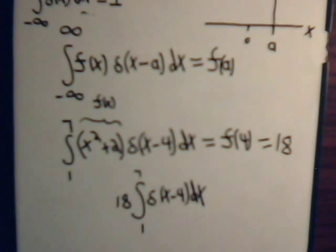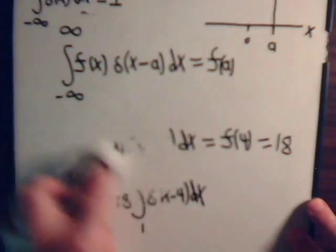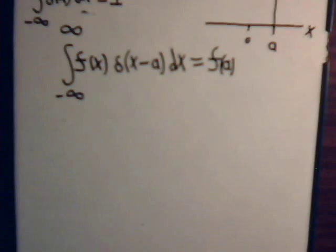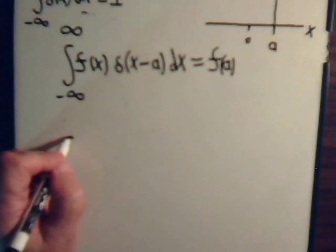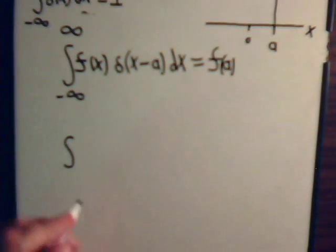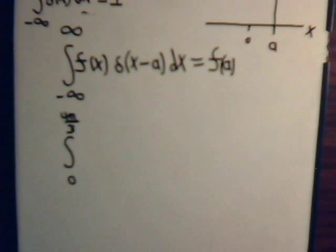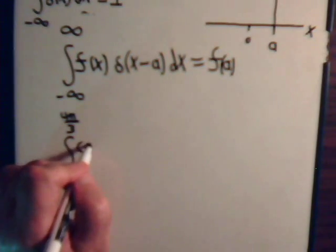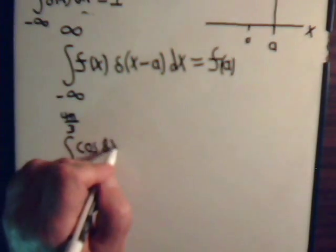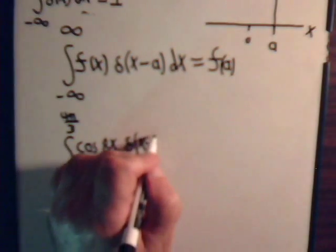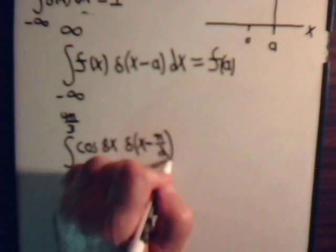So, there's a specific example of this relationship. Let's just take another, let's take one that involves a trigonometric one. Suppose we have the integral from 0 to 4 pi over 3. And we have the cosine of 8x, the Dirac delta function of x minus pi over 2 dx.